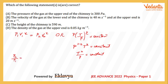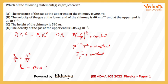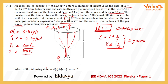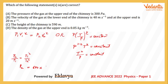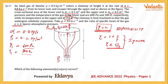From T²/p = constant, we get p2/p1 = T2²/T1². So p2 = p1 × (T2/T1)² = 600 × (150/300)² = 600 × (1/4) = 150 Pascal. The pressure at the top end is 150 Pascal.